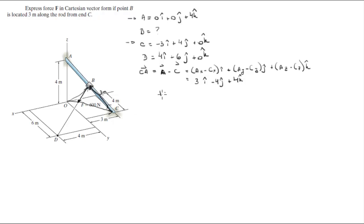Now we're gonna find the magnitude of this vector CA by doing the square root of the x component squared plus the y component squared plus the z component squared. These three values, 3, 4, and 4, you plug them in and you're gonna get that the magnitude is equal to 6.4.